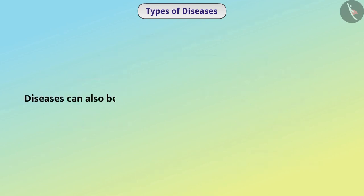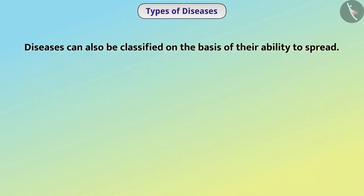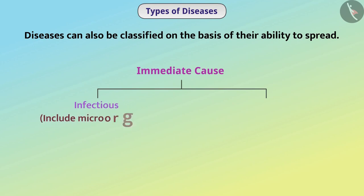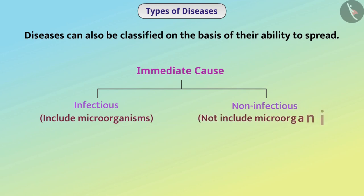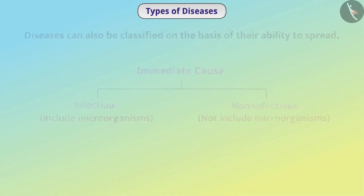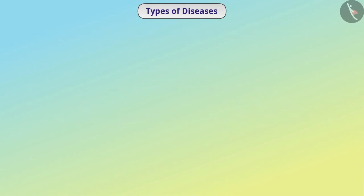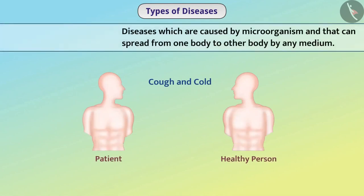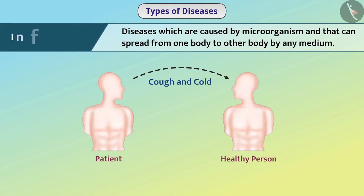Diseases can also be classified on the basis of their ability to spread. In the previous video, we learned that the immediate cause of disease can be infectious, which includes microorganisms, or non-infectious, which does not include microorganisms. Some diseases like cough and cold can spread in a community because their cause is a microorganism that can spread from one body to another by any medium. Such a disease is called an infectious disease.